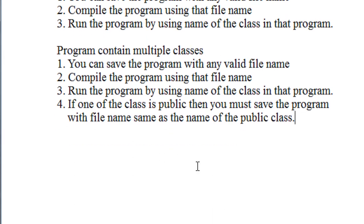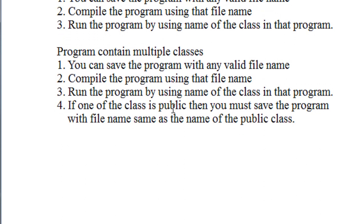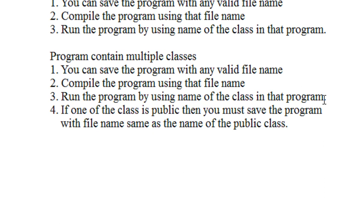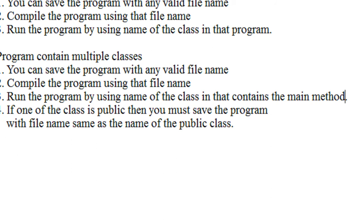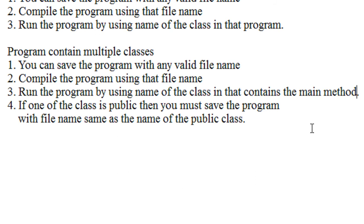If there is more than one class present in a program and if there is no public class present, you can save the program in any valid file name and you have to compile the program using that file name. You have to run the program with the name of the class that contains the main method. Also, if there is more than one class present and one of these classes is public, then you must save the program with the file name same as the name of that public class.